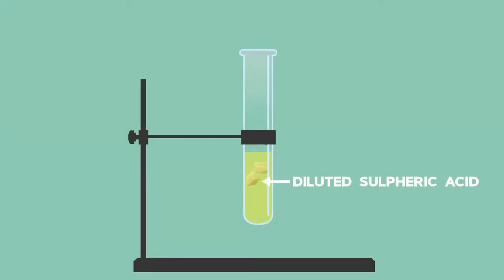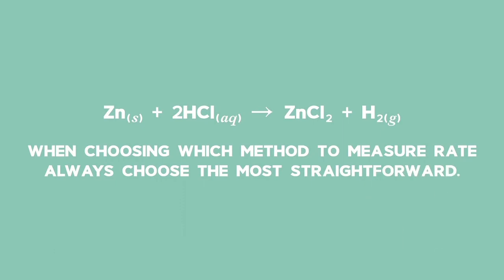If we look at a metal reacting with an acid, we can see that there are many ways to measure the rate of reaction. Using the reaction between zinc and hydrochloric acid as an example, you could measure the rate of reaction by... When choosing which method to measure rate, always choose the most straightforward.